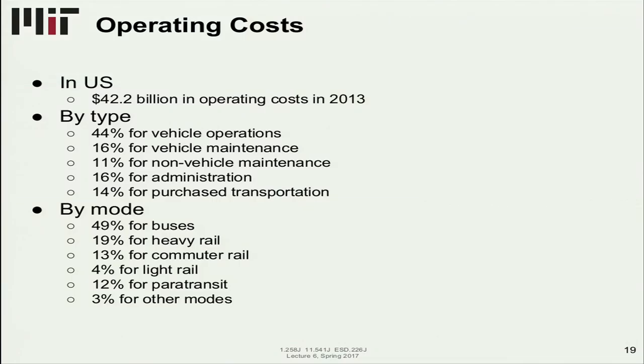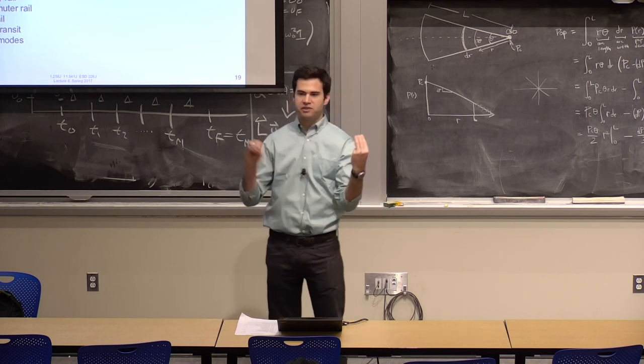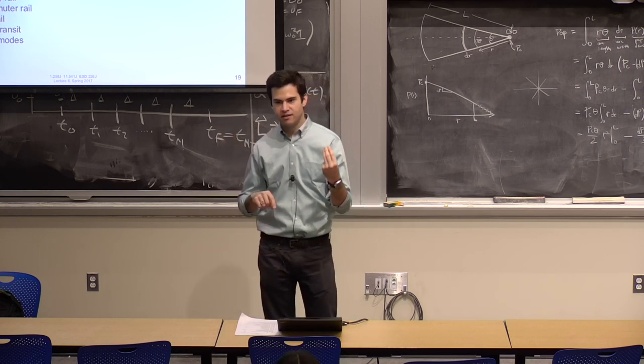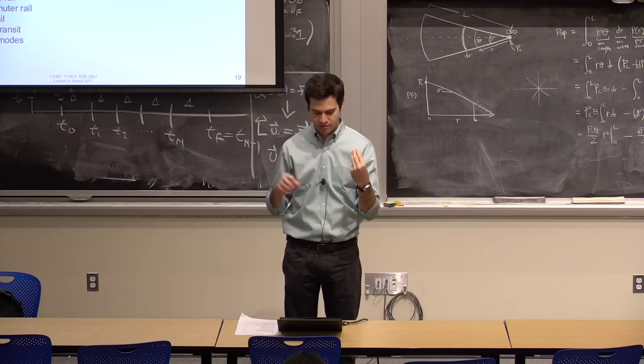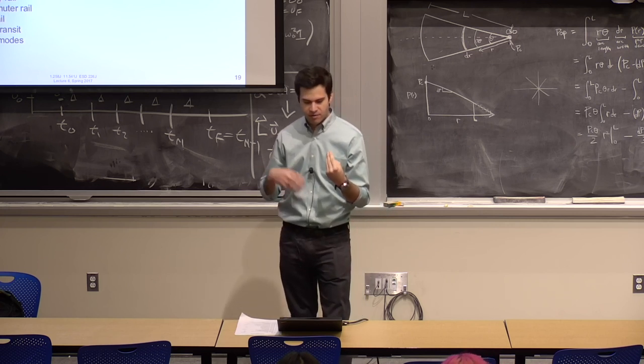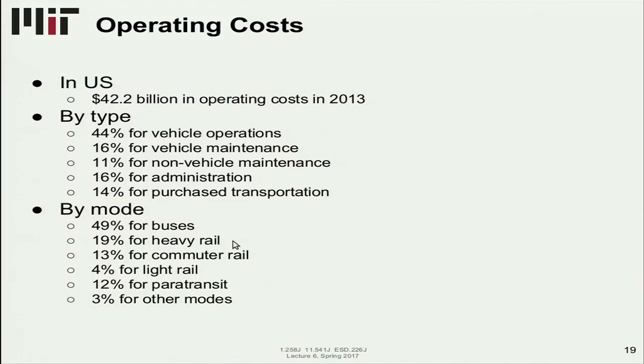Now let's look at operating costs. In the US in 2013, we spent 42.2 billion across the industry. If we divide that by type, about 44% was spent in vehicle operations. The rest was more or less evenly distributed between vehicle maintenance, other kinds of maintenance like facility maintenance, administration, and purchased transportation. Purchased transportation is when a public agency outsources the operation of some mode. Most of this 14% is paratransit, on-demand transportation for the handicapped. Some of it is commuter rail.